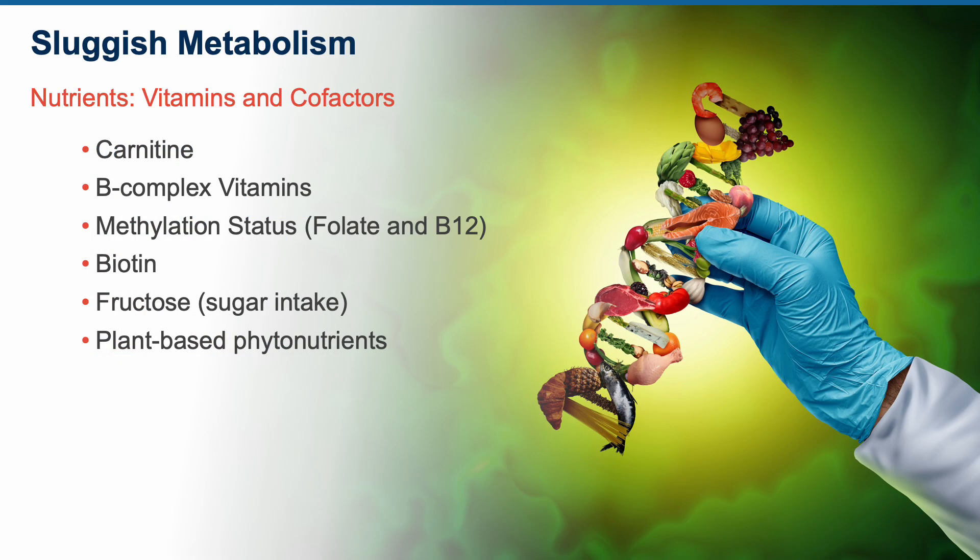Nutrition is critical to optimize metabolic function. The OAP offers assessment of several key nutrients, including carnitine, B-complex vitamins, methylation status — namely vitamin B12 and folate — biotin, fructose intake, and plant-based phytonutrients.